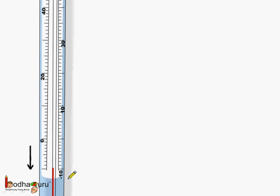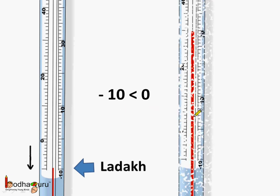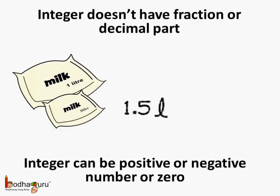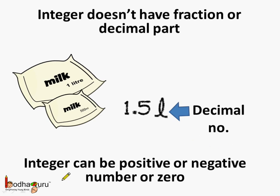The temperature was minus 10 degrees in Ladakh and minus 10 is less than 0. But the temperature can also be greater than 0, like the temperature of Hyderabad was 30 degrees, and 30 degrees is greater than 0. So, we have numbers which are greater than 0 like 30, or less than 0 like minus 10. The number keeps on increasing as we go up. But remember, an integer does not have a fraction or decimal part. When we say 1.5 liters, it is actually a decimal number — it is not an integer. So, an integer can be a positive or negative number, or can be 0.